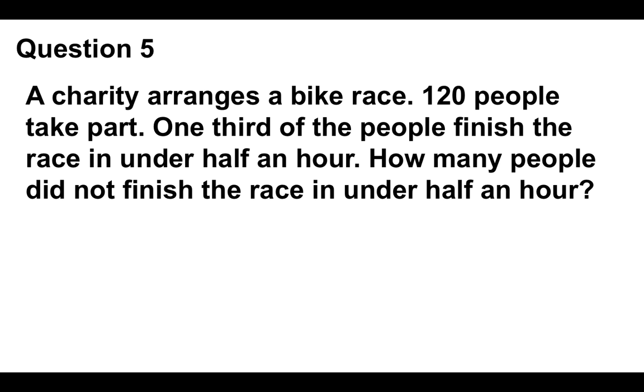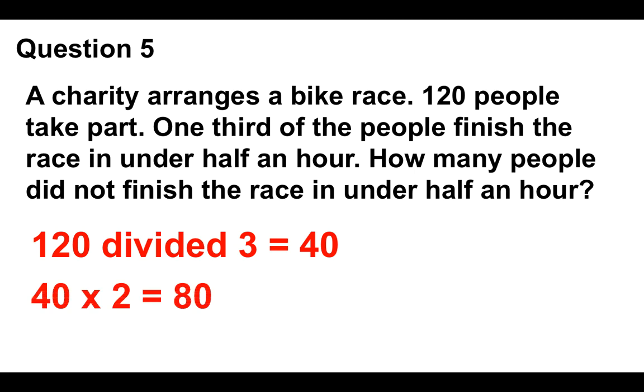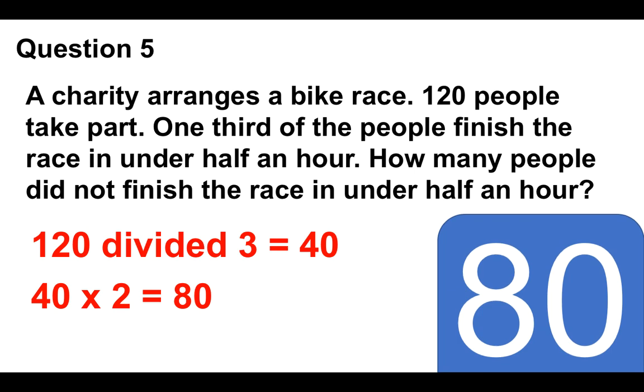Question number five: A charity arranges a bike race. 120 people take part. One third of the people finish the race in under half an hour. How many people do not finish the race in under half an hour? So it's 120 in total. Because we're working in thirds, one third of the people finish it in under half an hour, and two thirds don't. And we need to work out two thirds. So 120 divided by three equals 40. And that 40 means that one third of the people finish the race in under half an hour. So who did not? 40 times two equals 80. So that's the correct answer: 80 to question number five.